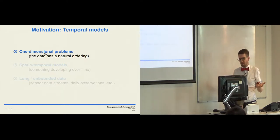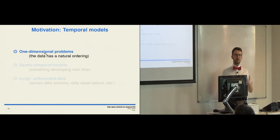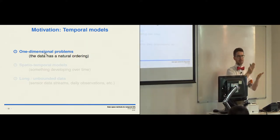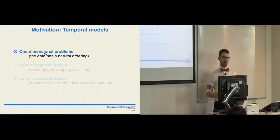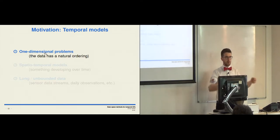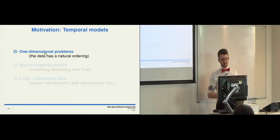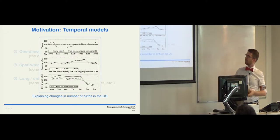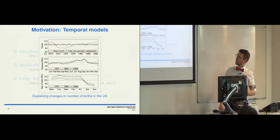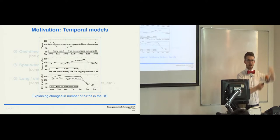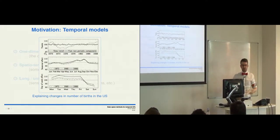One-dimensional problems — time series — are data sets where the data has a natural ordering. You can order inputs in only one way because you have time stamps, unlike spatial problems where there's no natural ordering. For example, modeling the number of birds in the US over several decades, or the number of babies born every day — one data point per day.